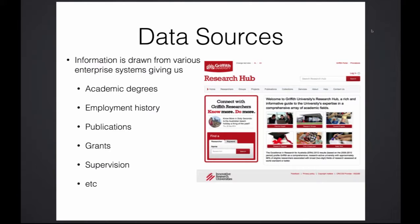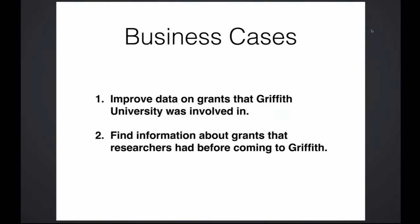For the Research Hub, we identified two business cases where we could use external grant data and really add some value. One was to improve data on existing grants — get better descriptions, get full funding amounts like the total grant amount, not just the share that Griffith University received. The other business case was that while we knew about grants affiliated with Griffith, we didn't know anything about grants that researchers had while they were not at Griffith. Adding that information became quite important, because while it doesn't showcase Griffith research directly, it is an important part of the biography of our researchers and gives a much more complete picture — especially since we do have historic information about publications. Not having the grants left a gap that many people were eager to close, and we didn't want people to enter this information manually.